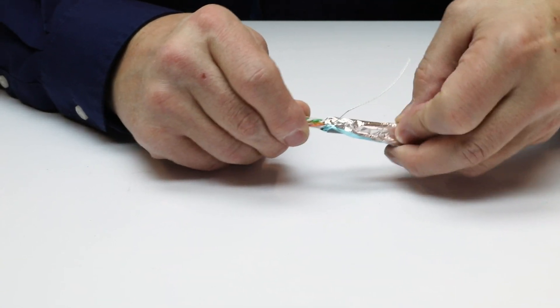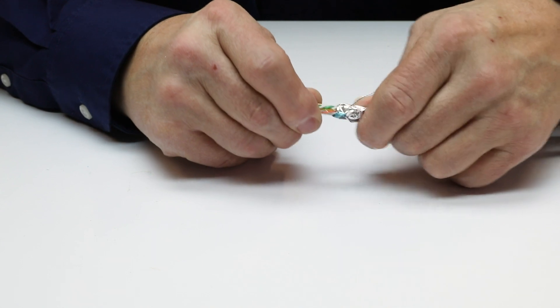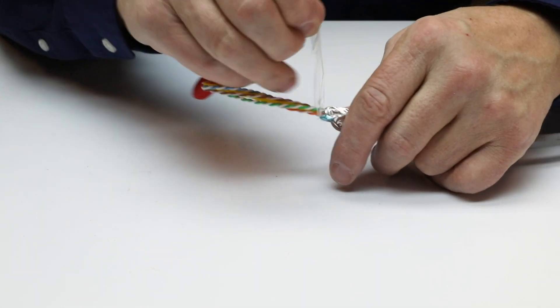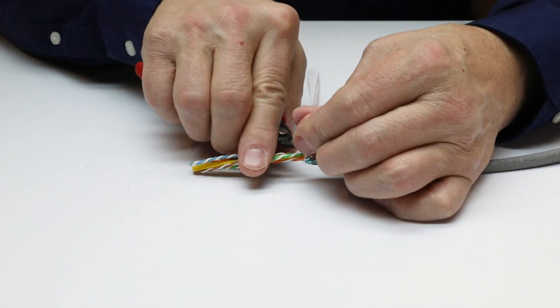If the shielded cable has a mesh braid, the braid may be combed out and twisted together to form a drain wire. Cut off the strip string, nip and tear off the mylar wrap.